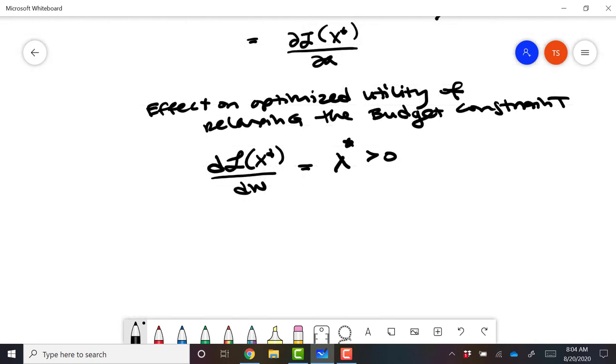What about prices? So here, we have to say which price, so this is d PI. This derivative gives us minus lambda star times xi star.